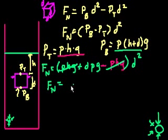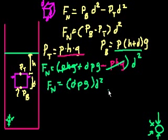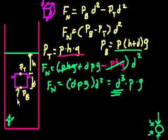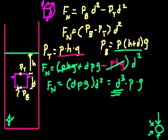So the net force equals dρg times d squared, which equals d cubed times the density of the liquid times gravity. Now d cubed is the volume of this cube — and it's also the volume of the water displaced, because that amount of water has to be moved out of the way for the cube to go in. So this is the volume of water displaced.